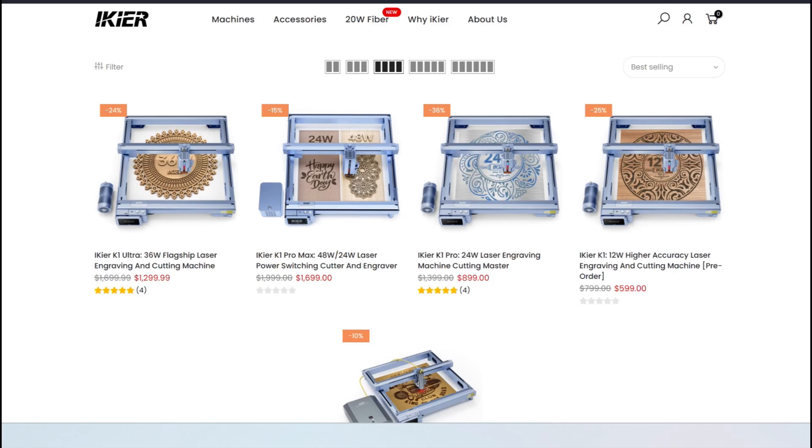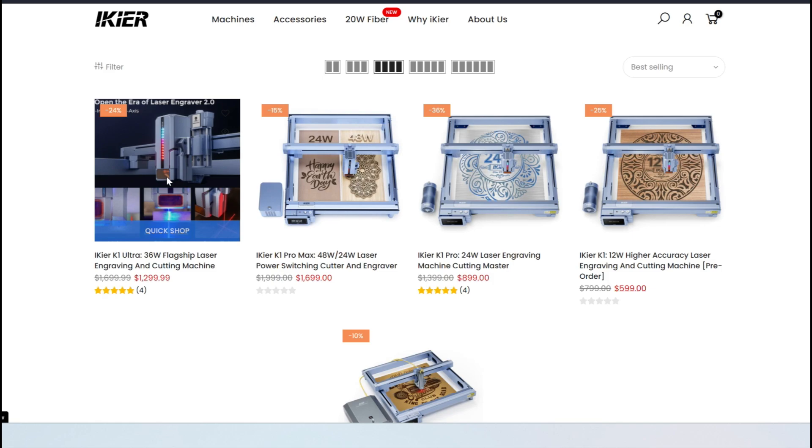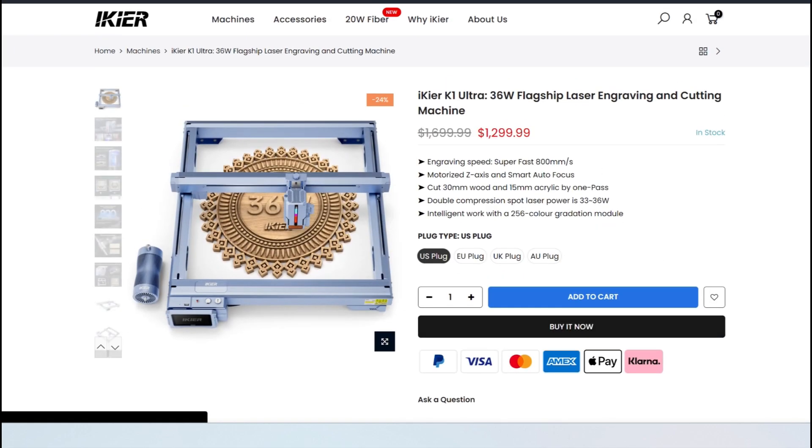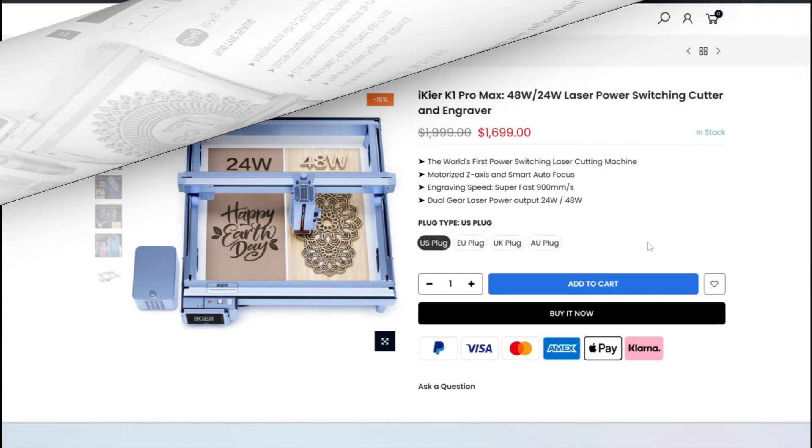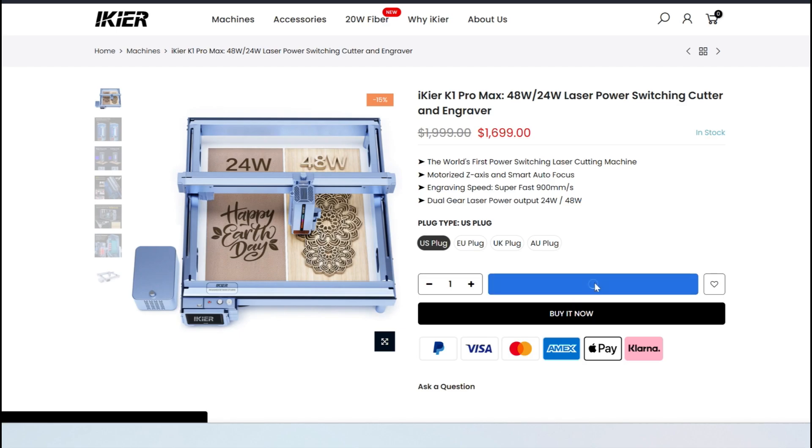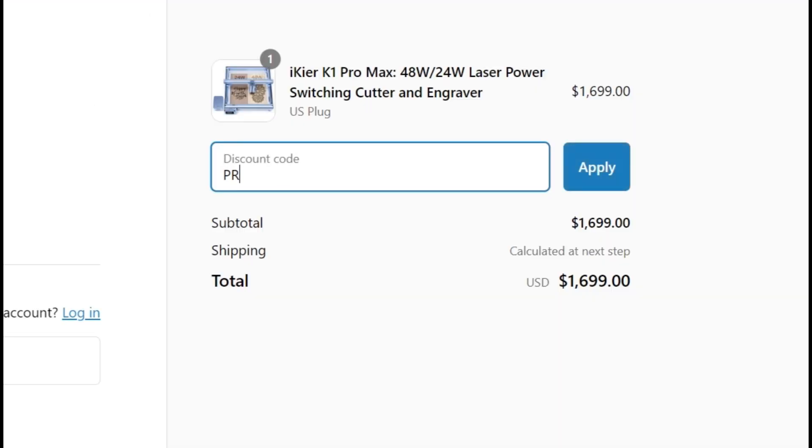At the time of making this video, Ikea are discounting the Ultra to $1,300 US dollars, which I reckon is a bargain. Or you can use the coupon code PRO50 and grab yourself the Pro Max for $1,650 USD.